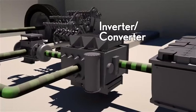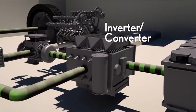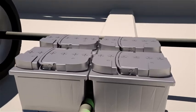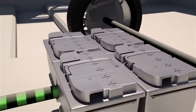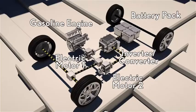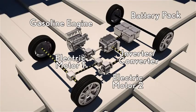And when MG1 and MG2 are being used as generators, the inverter converter turns the alternating current back into direct current for storage in the hybrid battery. The inverter converter boosts battery power to a higher voltage when MG2 needs power for higher acceleration.